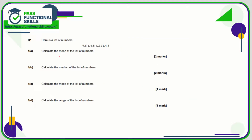We need to work out the mean of this list of numbers. The mean is going to be all of these numbers added together divided by the total number of values. And there are 10 values, so that's nice and easy — we're dividing the total by 10. You could add these numbers in order,